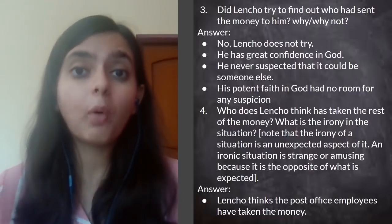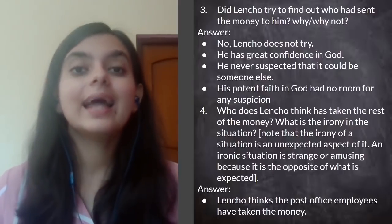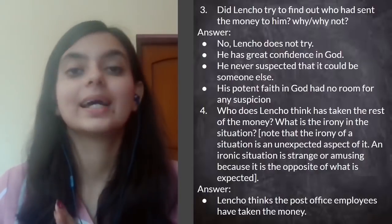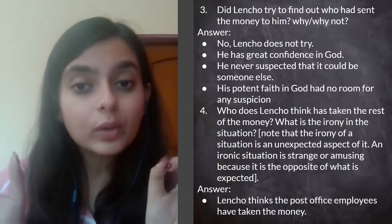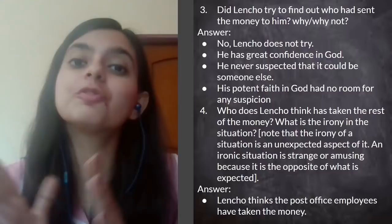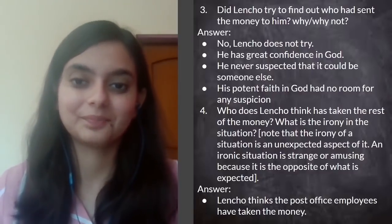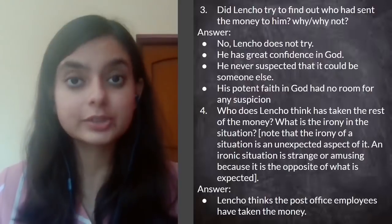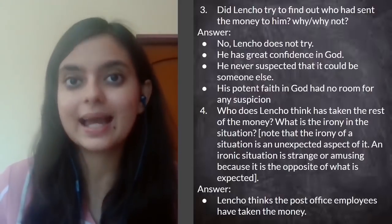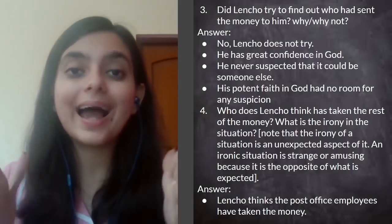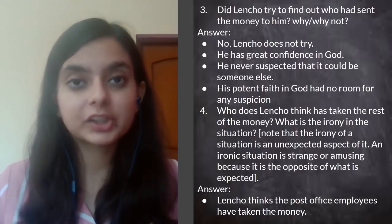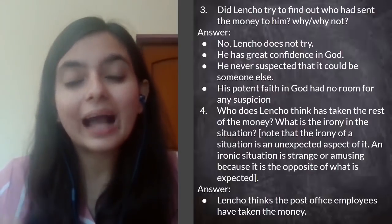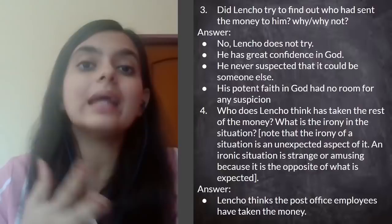His faith in God was so strong that it had absolutely no space for any suspicion. Keep these points in mind and you will definitely be able to frame your own sentences. The next question is: who does Lencho think has taken the rest of the money, and what is the irony of the situation? I spoke about irony in my previous lesson — irony is when a situation has an unexpected aspect, where the opposite of what you expect actually happens.